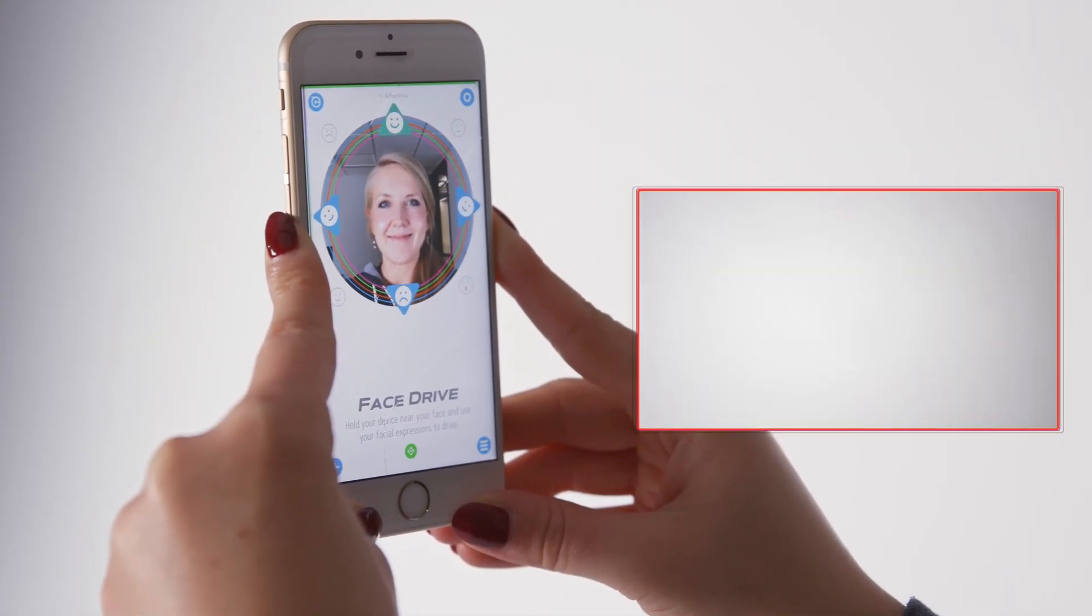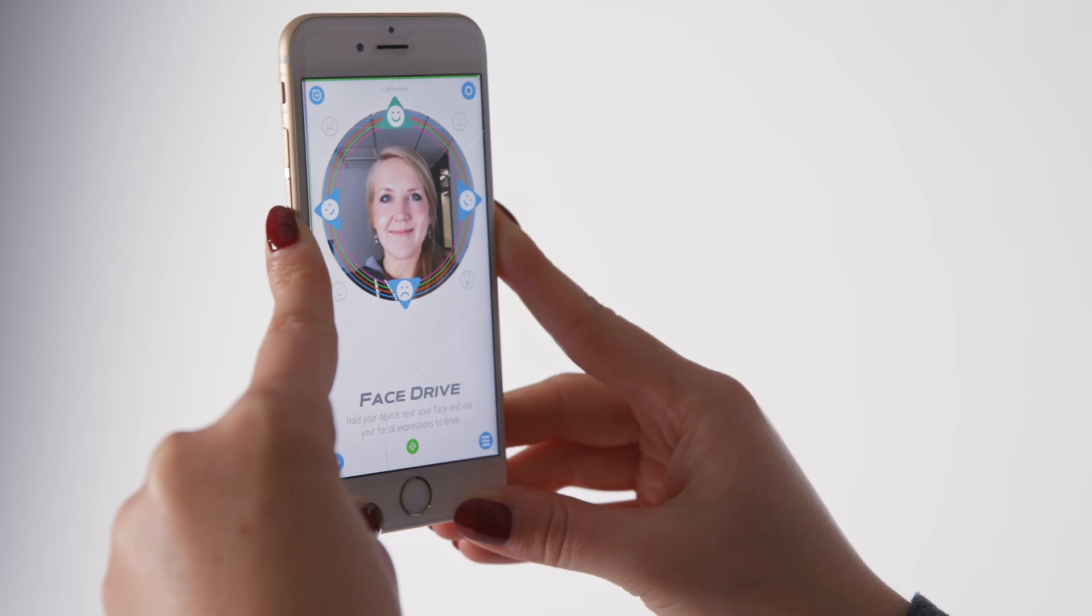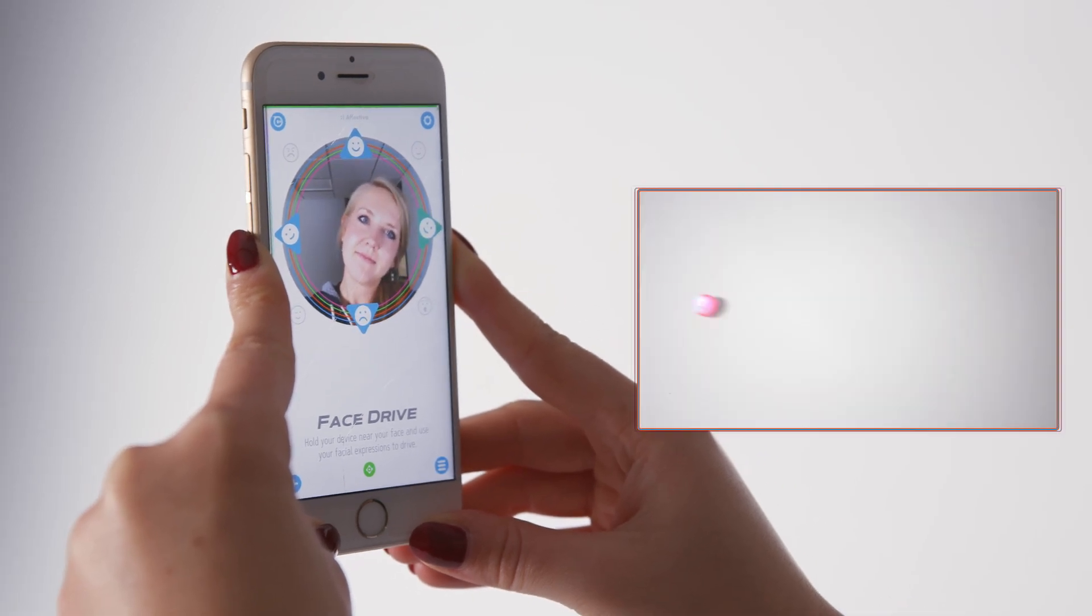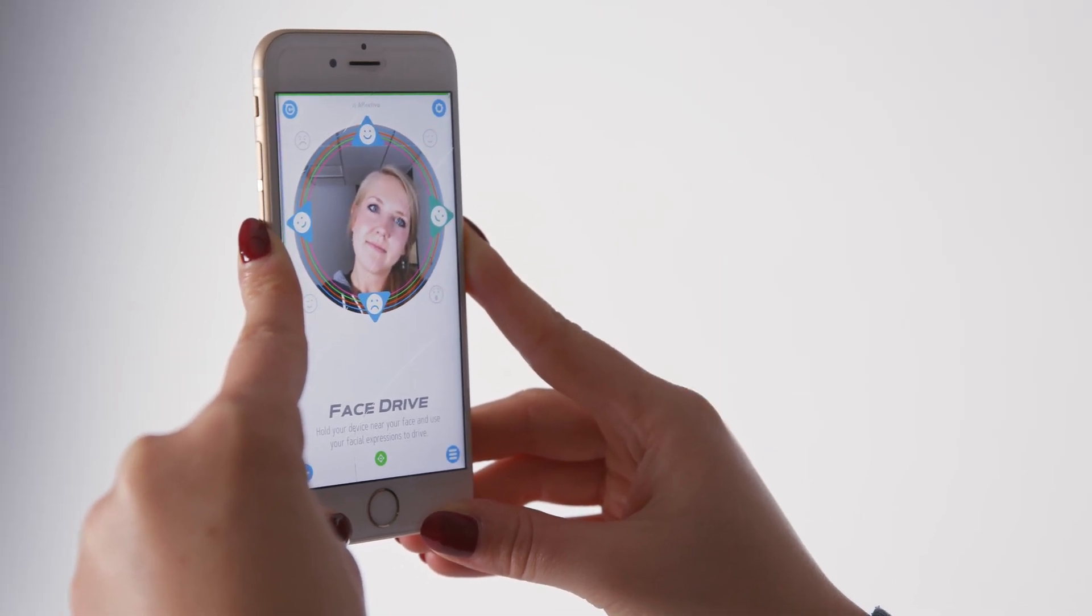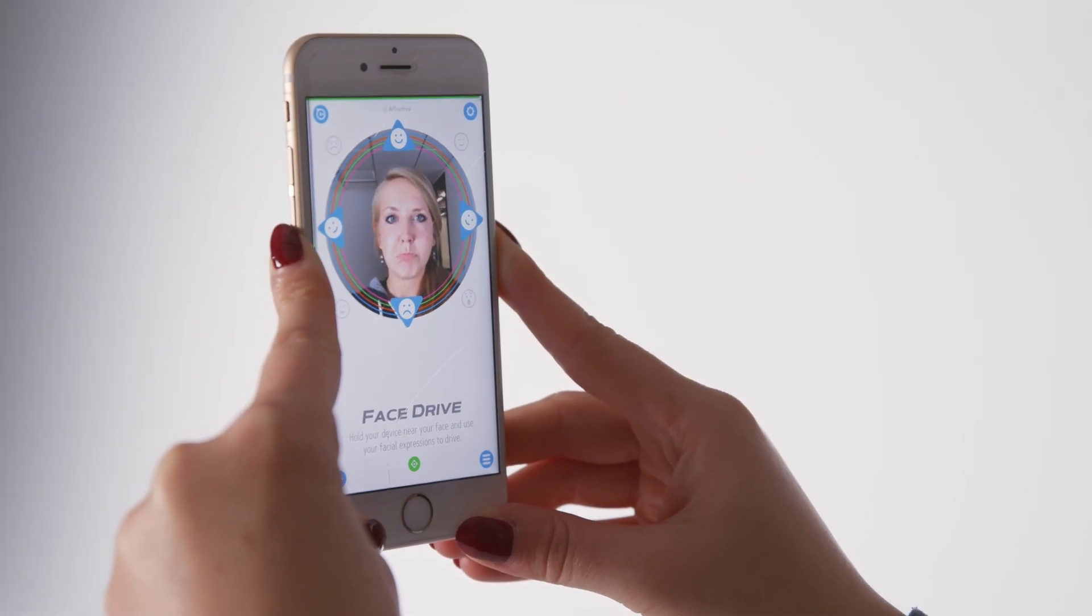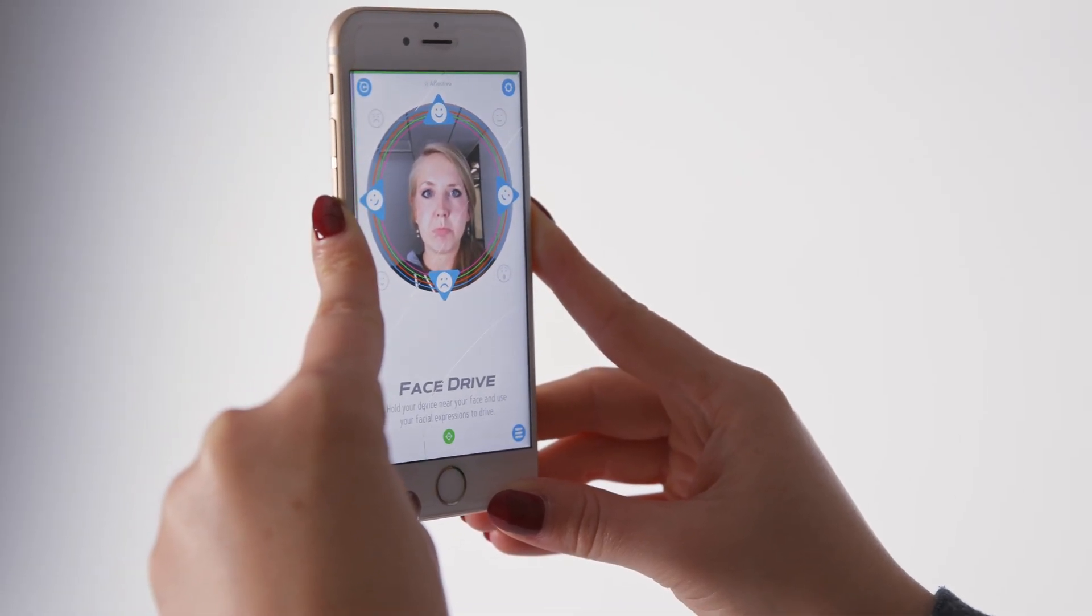Once it has recognized your face, you can follow the on-screen icons to make mini drive with different facial expressions. Smile or frown to send mini forward or back, and tilt your head to the side to send it in that direction. There are a few other expressions that will make your mini respond, so try experimenting with some goofy facial expressions and see what happens.